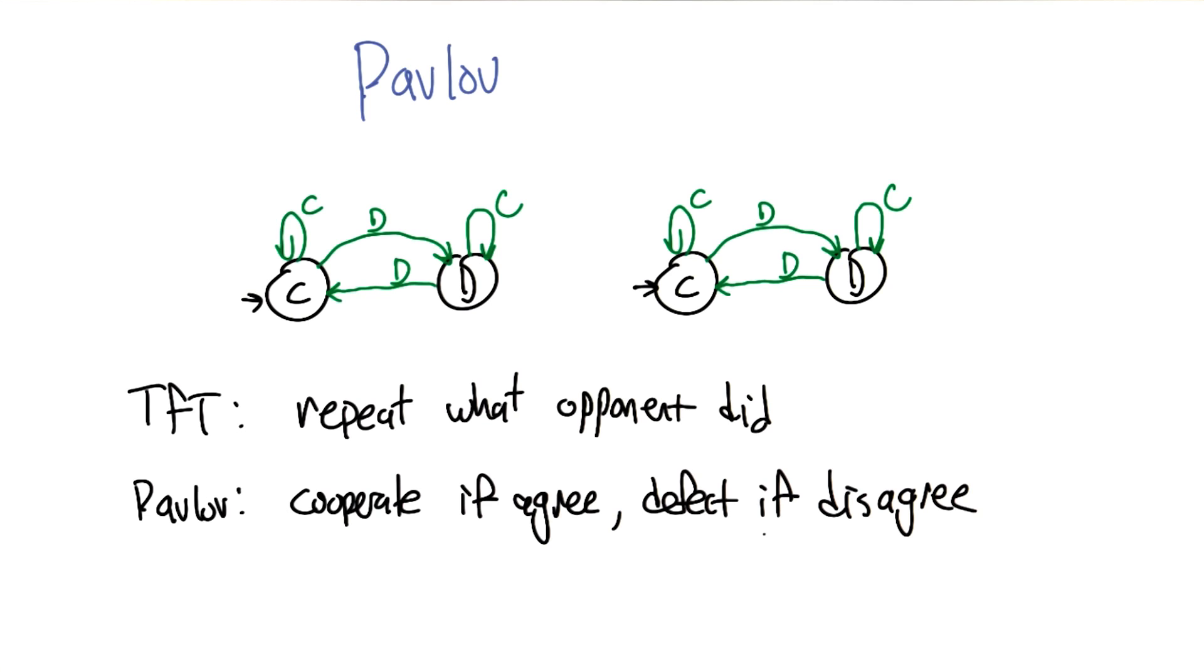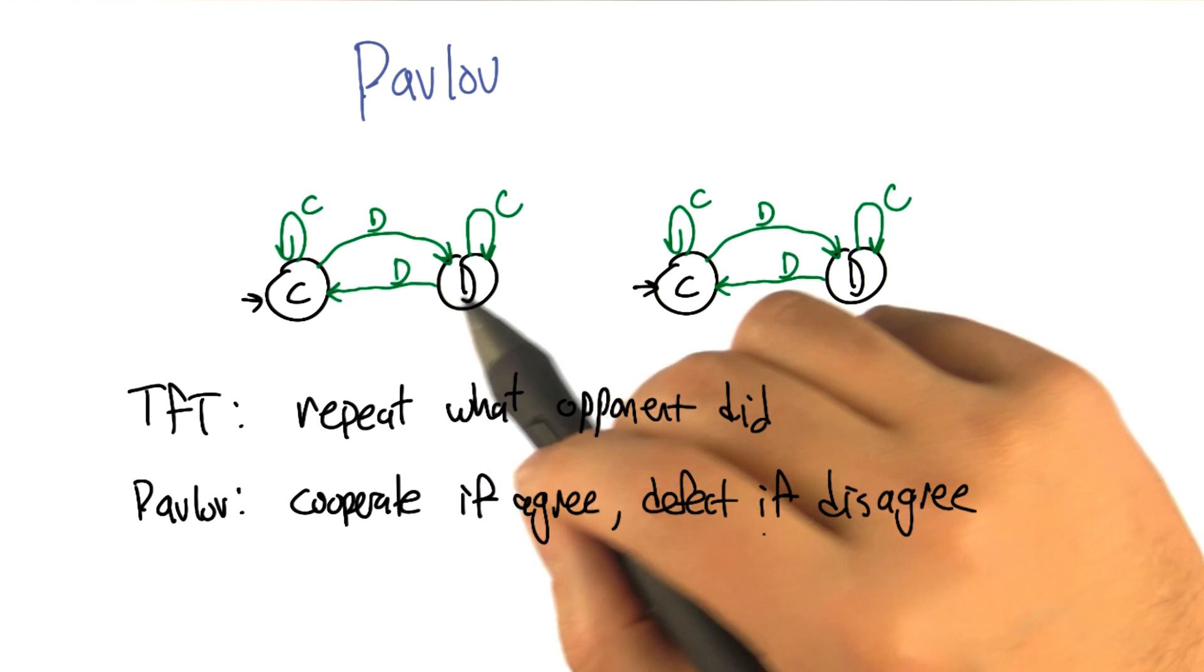And then if you ever defect on me, you have basically attacked me, so I'm going to defect on you unless you start cooperating again, in which case I think you're being reasonable and we start cooperating again. Except that's tit for tat.